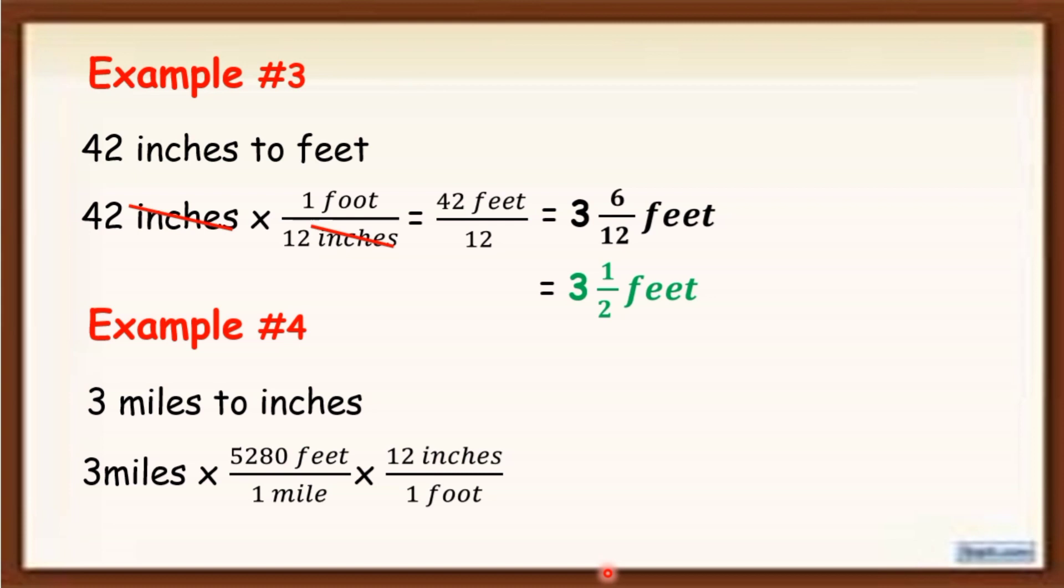We are going to cancel miles and feet because we are looking for inches. Then, after that, simplify. 3 times 5,280 times 12 inches divided by 1 is equal to 190,080 inches.